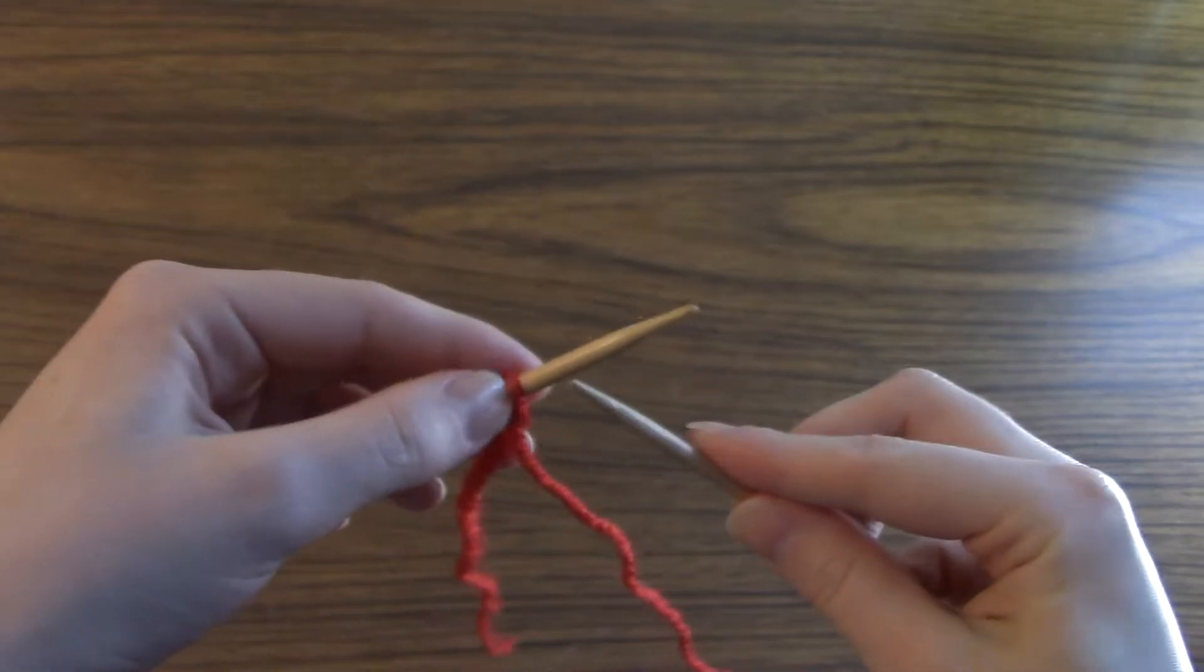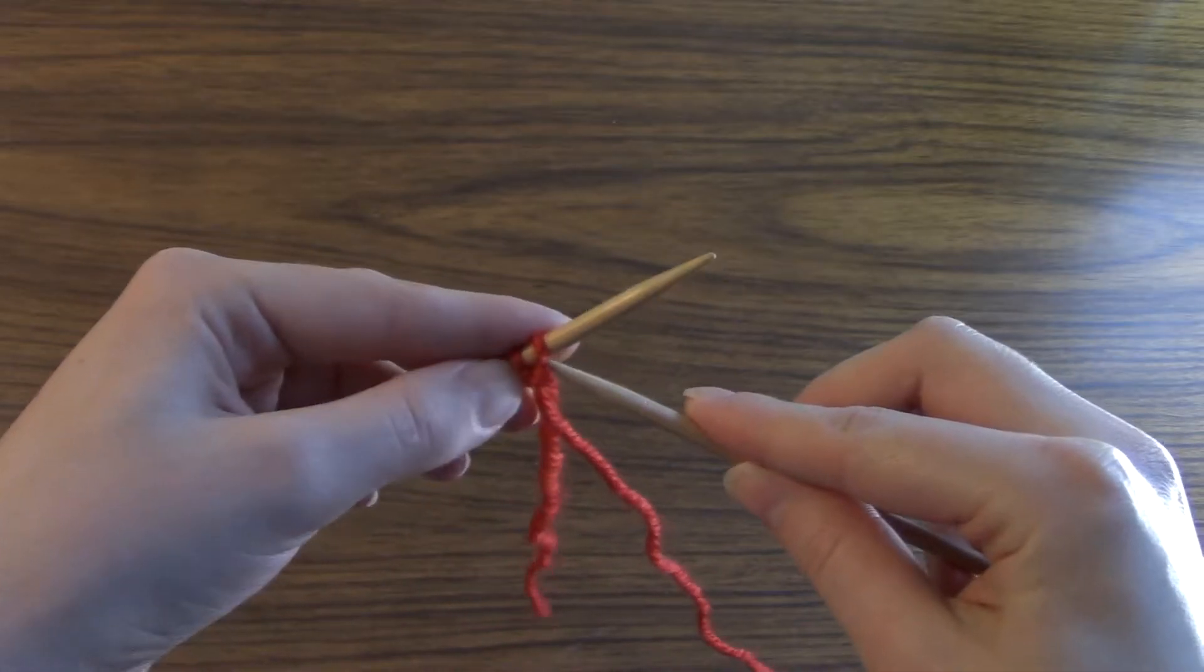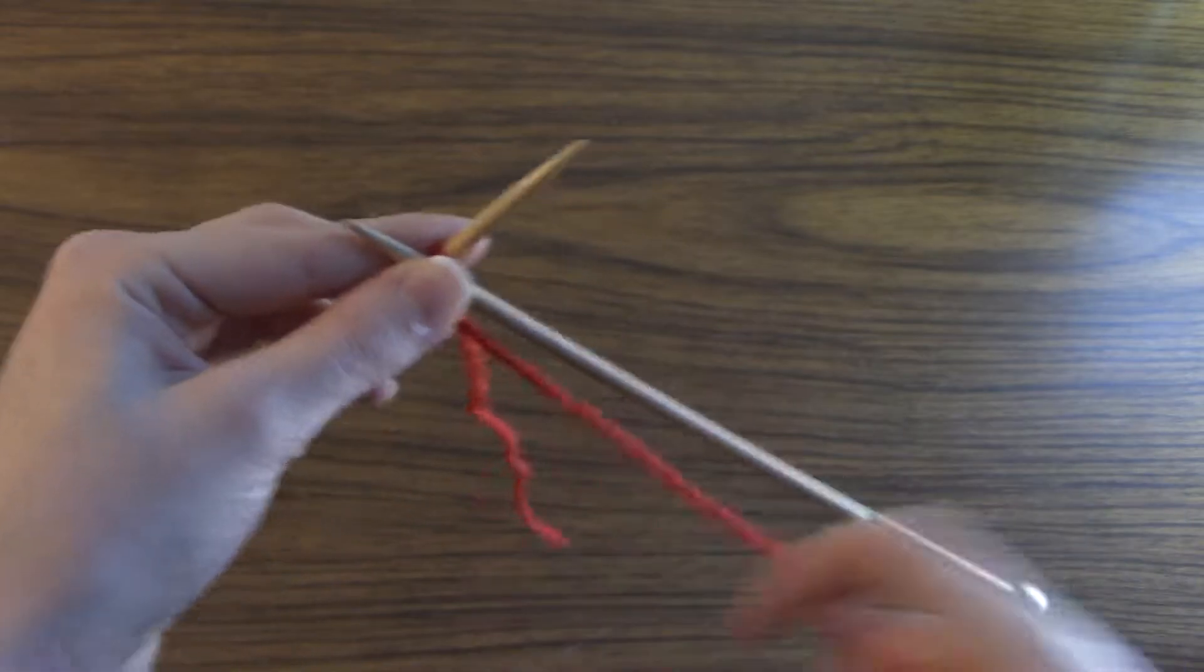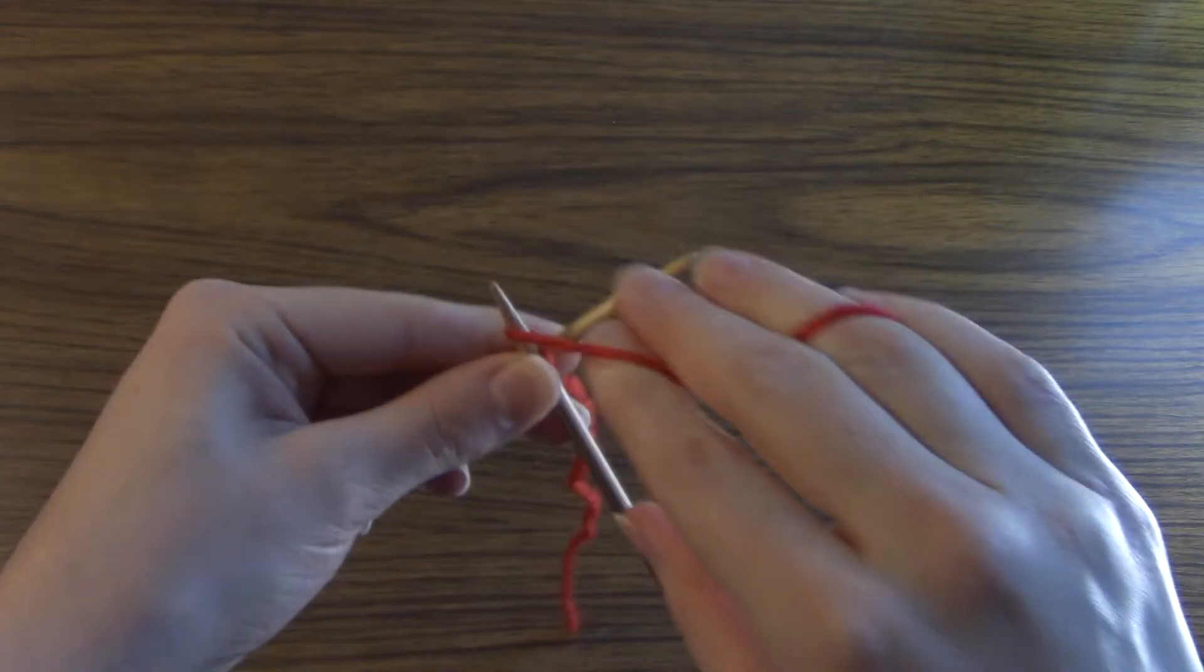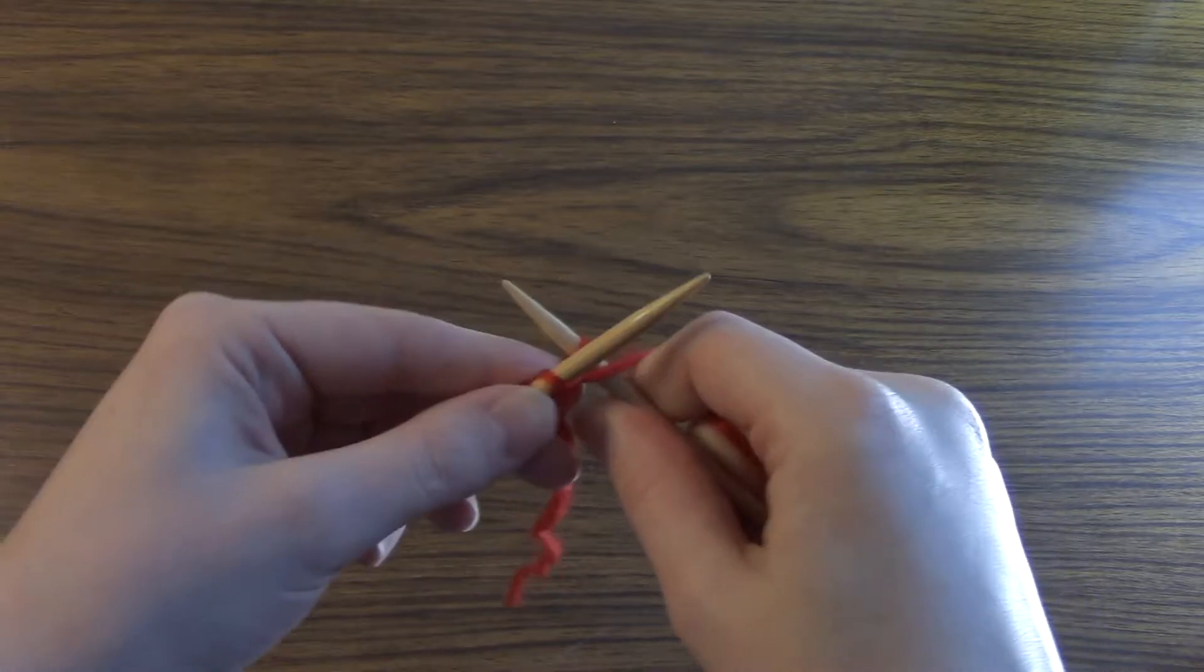Then you're going to take your needle in your dominant hand and place it through the first stitch through the front. You're going to have your yarn in the front, wrap counter clockwise, push it through,